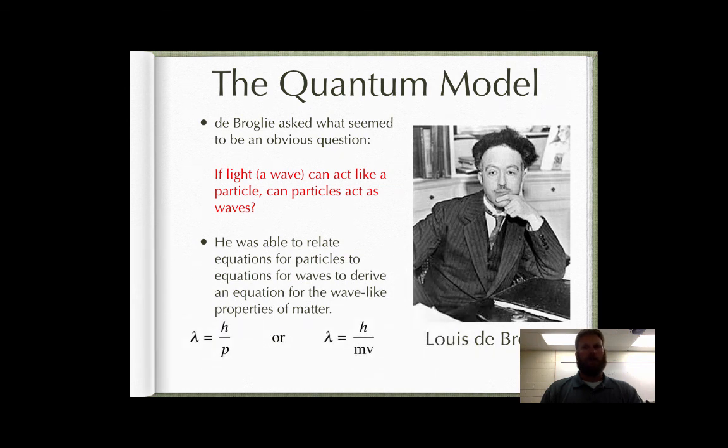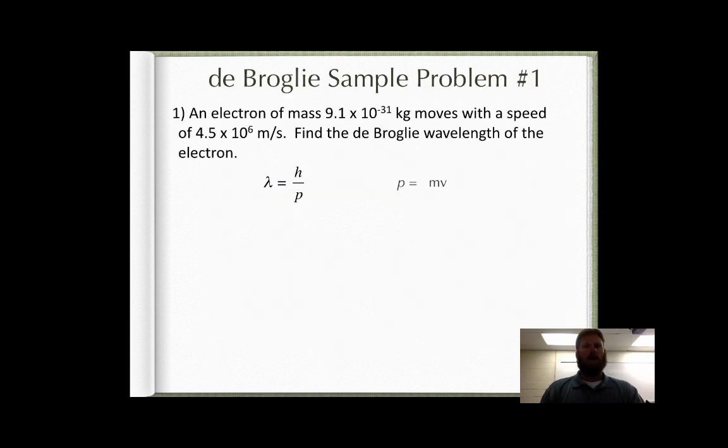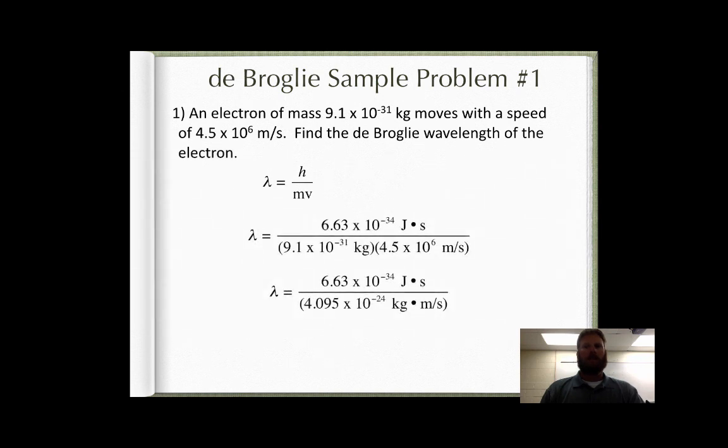These are the equations he developed. Nothing you need to memorize, but I just want to show you why the wavelength of an electron is important. So if an electron has the mass given here in the problem, and it moves relatively at the speed given in the problem, what would be the electron's wavelength? If we plug the numbers in and solve, what we would figure out is that the wavelength of an electron is 1.6 times 10 to the negative 10th of meters.